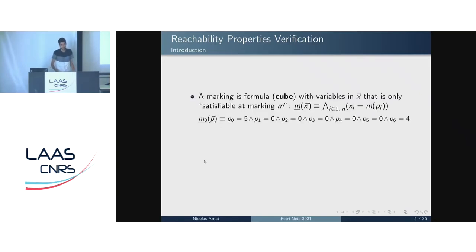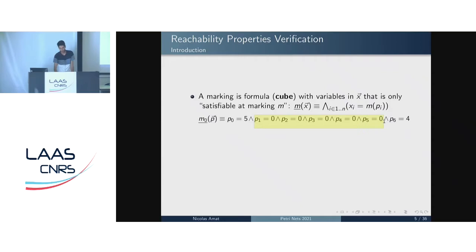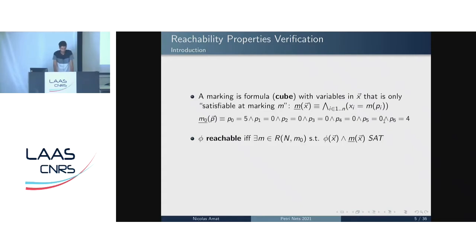A marking can be seen as a formula, specifically as a conjunction where we introduce one variable per place and add constraints that each variable equals the corresponding marking value. For example, the initial marking had five tokens in place P0, so we add the constraint P0 = 5, and four tokens in P6, so P6 = 4; all other places are constrained to zero. Checking reachability is equivalent to checking if there exists a reachable marking m such that φ ∧ m is satisfiable. Checking invariance is equivalent to verifying that for all reachable markings, ¬φ ∧ m is satisfiable.